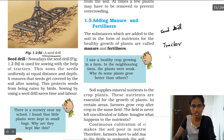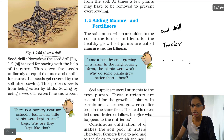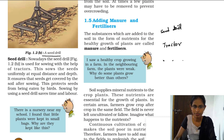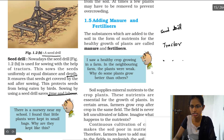With the seed drill, there is a proper distance maintained between seeds, and they are automatically covered with soil so that birds cannot eat them. This also saves time and labor. Seeds are sown at the same depth and equal distances in the soil.